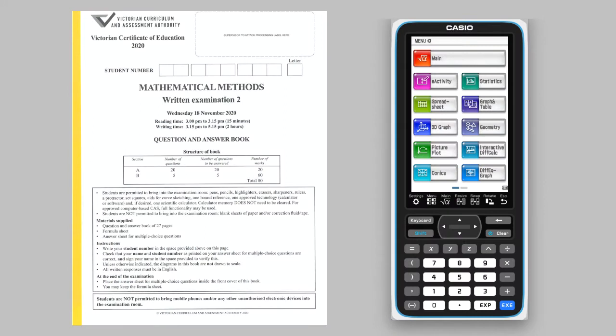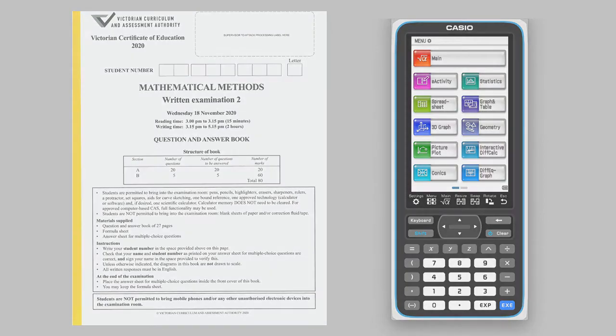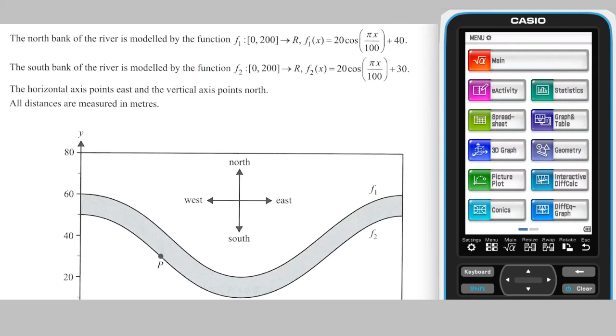This video will present solutions to the VCE 2020 Mathematical Methods Written Examination 2, Section B, Question 2. This question concerns a river modelled as the region between two trigonometric functions.